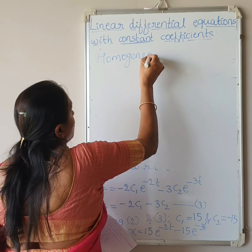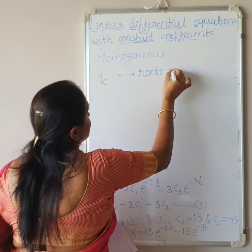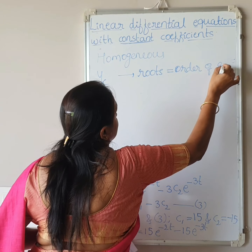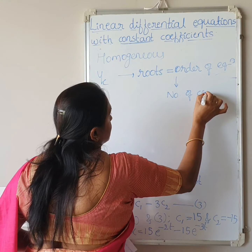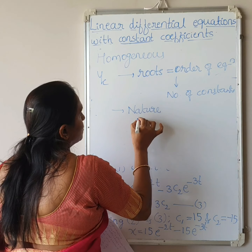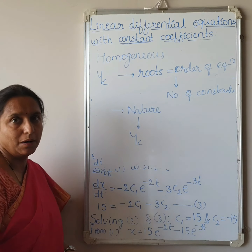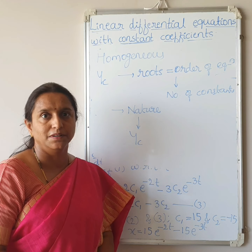Substituting back, the solution is x equals 15·e^(-2t) minus 15·e^(-3t). To summarize the method: first check if the equation is homogeneous or non-homogeneous. If homogeneous, find only yc. To find yc, find the roots — the number of roots equals the order of the equation, which also equals the number of constants. Then find the nature of the roots and write yc accordingly. Thank you — please like, comment, share and subscribe.